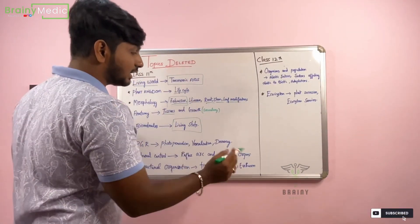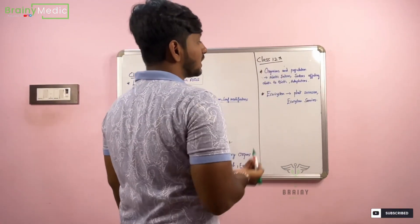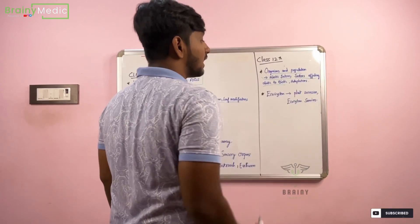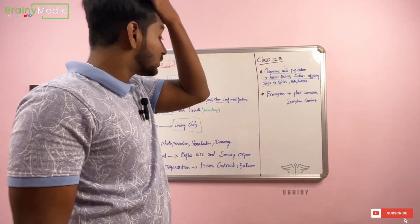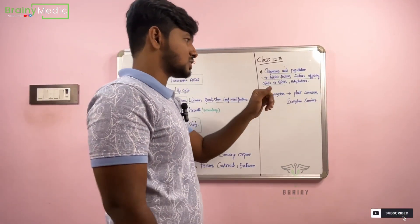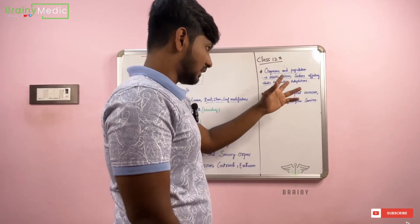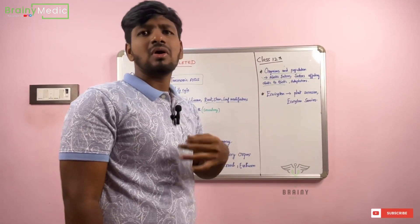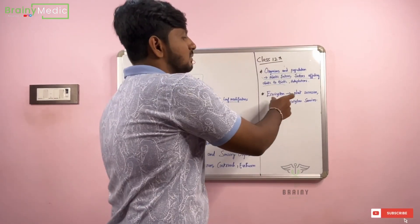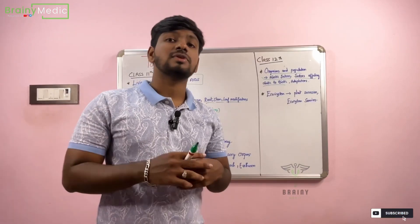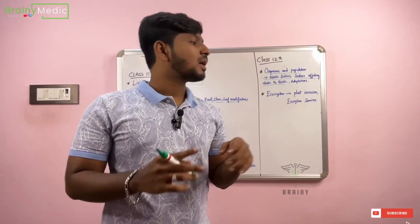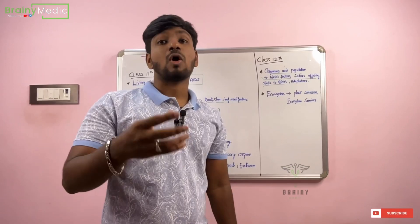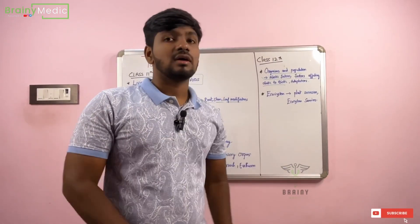Next, Class 12 topics. Organisms and Population chapter includes abiotic factors, factors affecting abiotic to biotic interactions, and Adaptations. In 2022, there were questions about abiotic factors. In the Ecosystem chapter, we have plant succession, xerosere succession, and hydrosere succession. In the last part, we have Ecosystem Services.